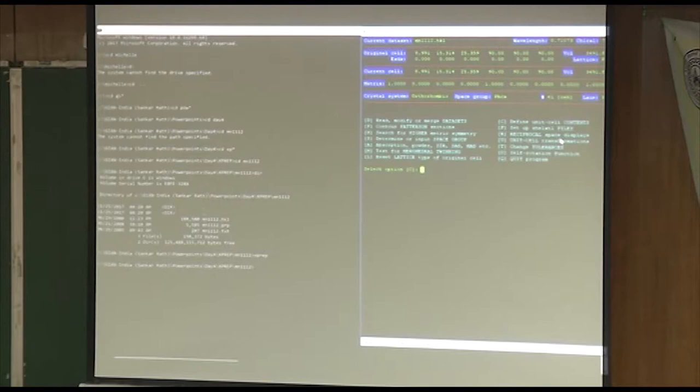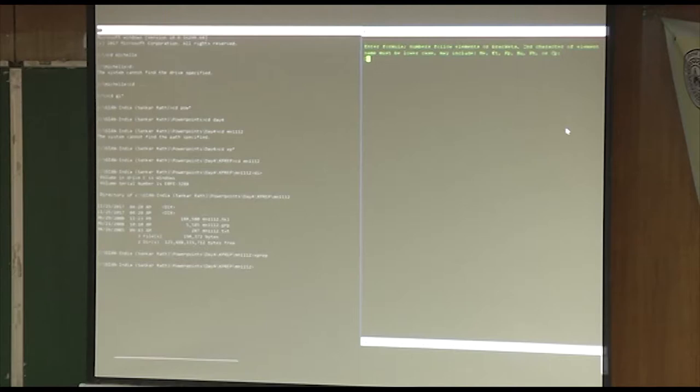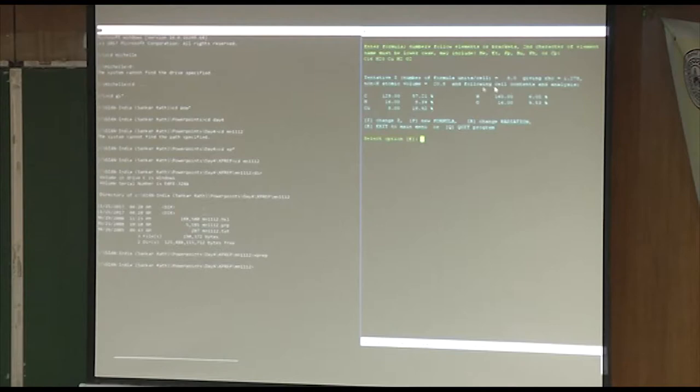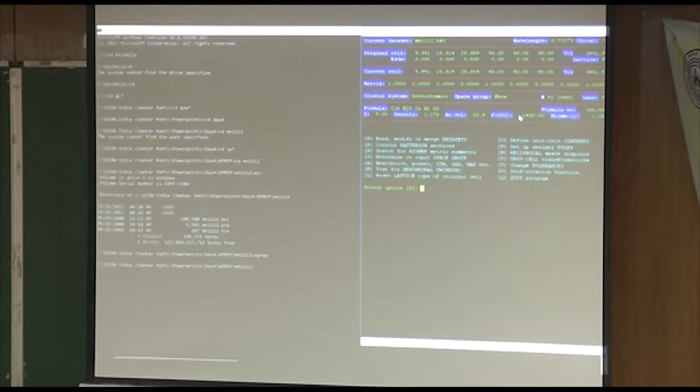Then E, exit to main menu. Now we need to put in the expected unit cell contents. The volume's 3492. PBCA has eight general positions. That's about 400 cubic angstroms per asymmetric unit, which would be about 20 atoms. Since I don't really know the structure, I'm just going to guess. I'm just going to say C16, H20, copper 1, N2, O2. And you see tentative Z is eight. That's correct for PBCA.